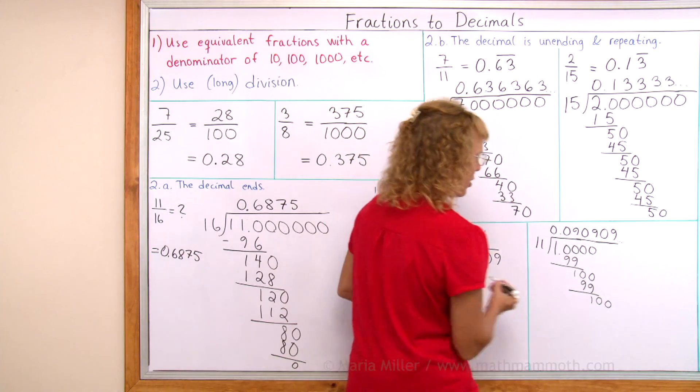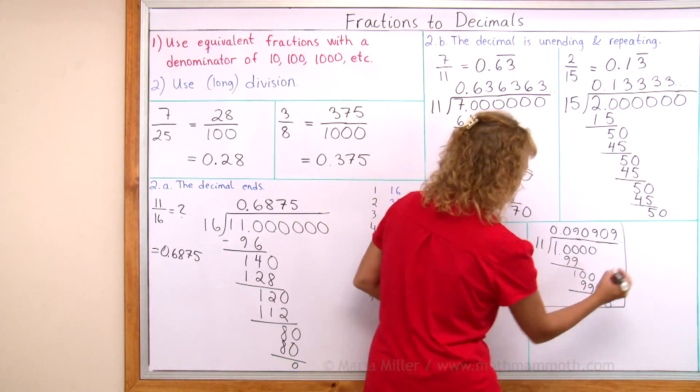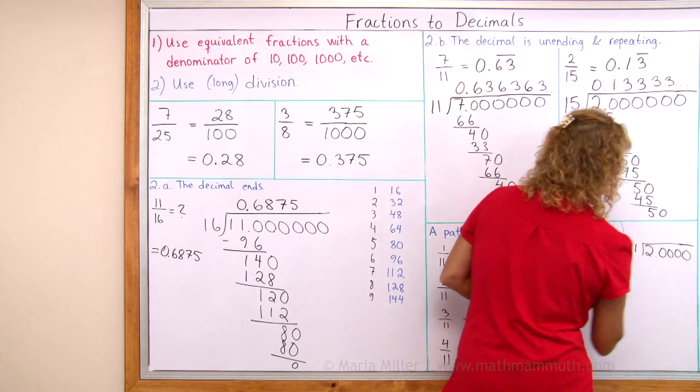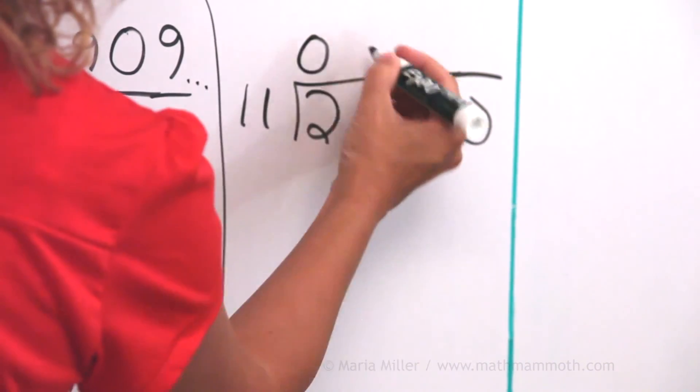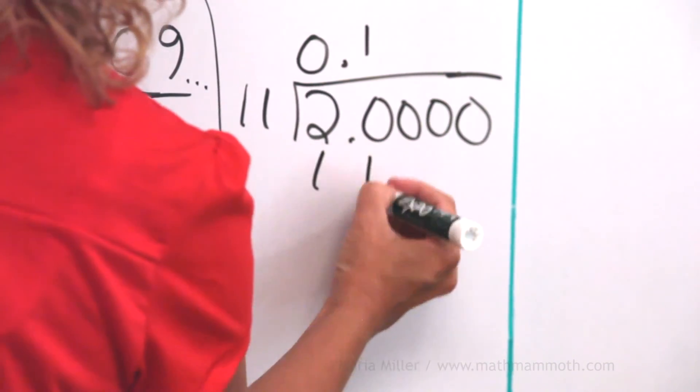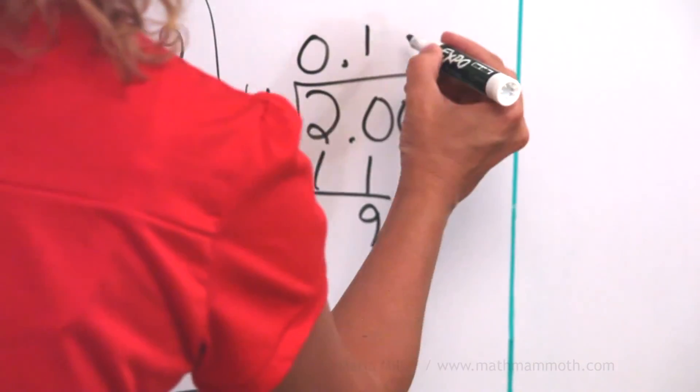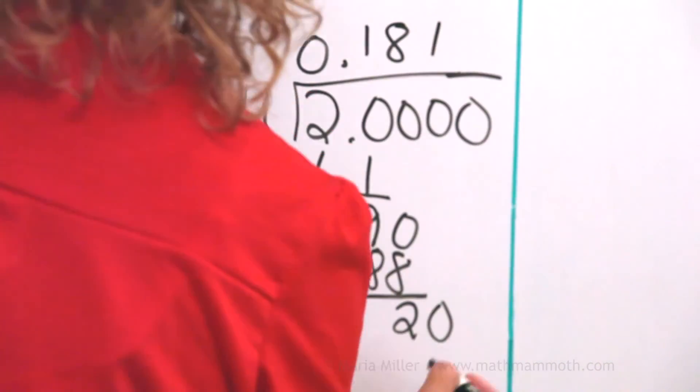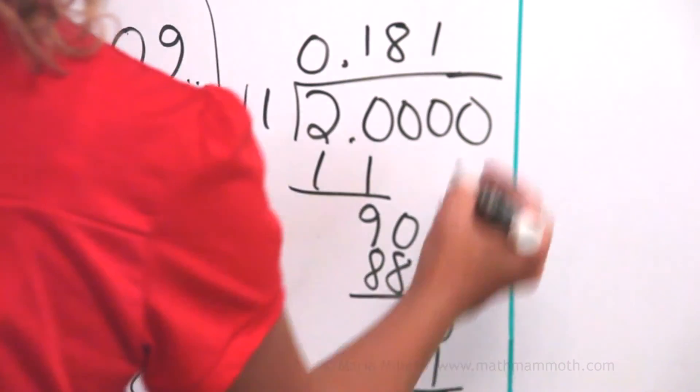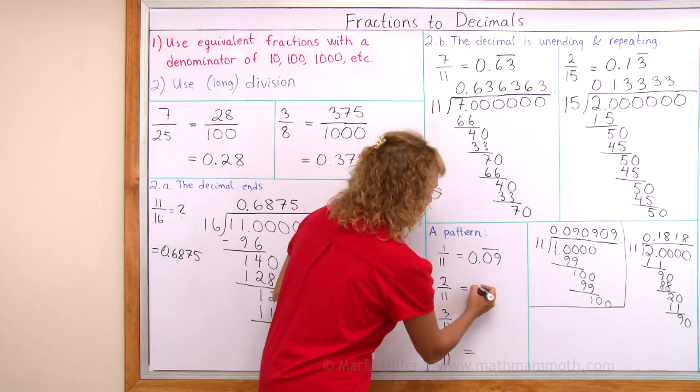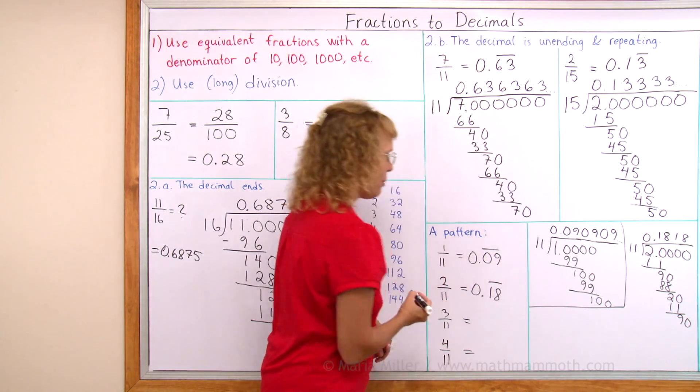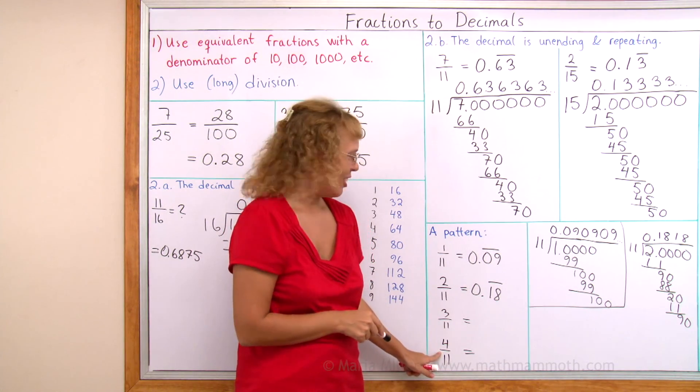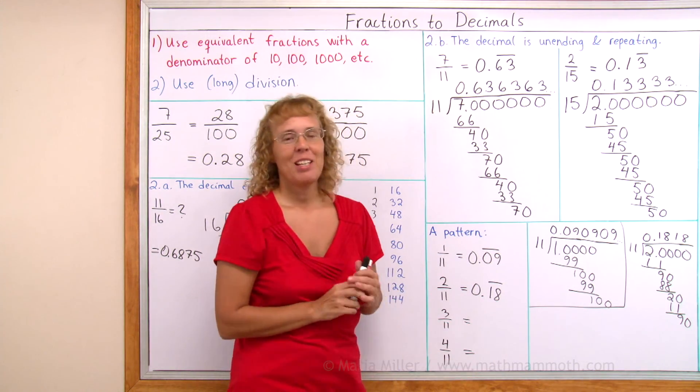Want to guess what this one will be? Two divided by eleven. Eleven goes into twenty one time, and then we get eleven. Subtract, ninety, eight times. Eight times eighty-eight, two, and then twenty. One time, eleven. Subtract, ninety, and eight times. So the repeating part here is zero point one eight. One eight repeats. Now I'm going to leave it up to you to check these two, if you can guess what kind of repeating part they have. We're all done with this lesson.